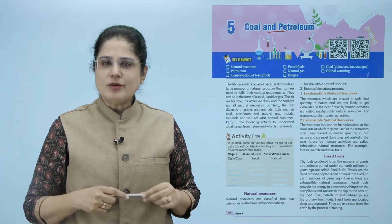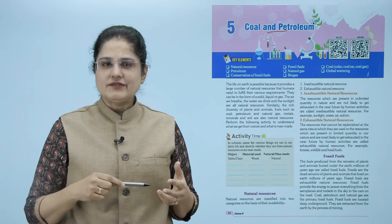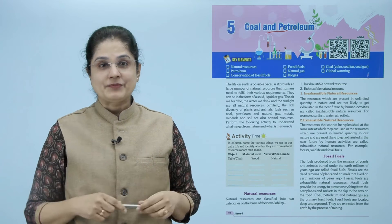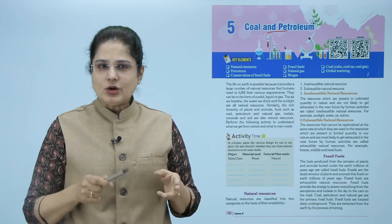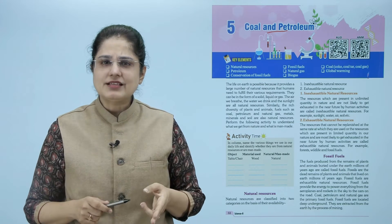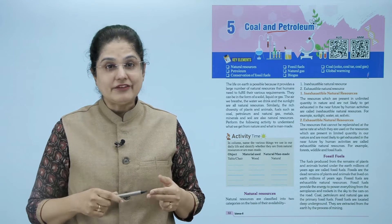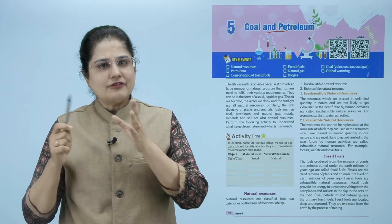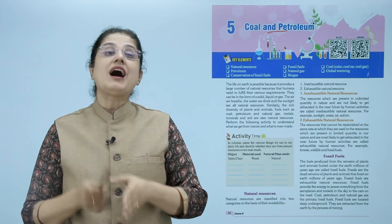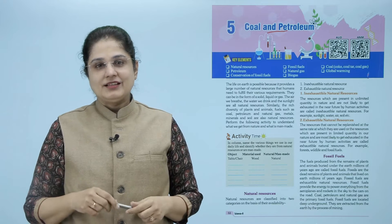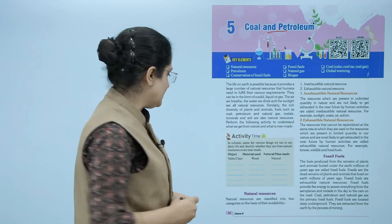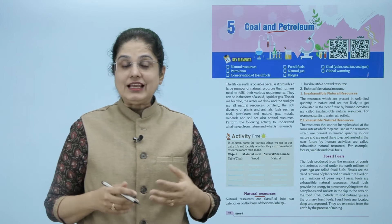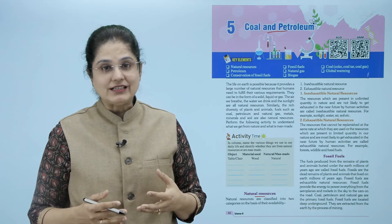So let us perform the following activity to understand what we get from nature and what is man-made. In a column, name the various things we use in our daily life and identify whether they are from natural resources or are man-made. Now let's come to the natural resources - इनको हम दो categories में divide कर सकते हैं based on their availability.